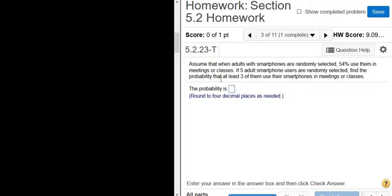So this problem is binomial. We have two possible outcomes. You can either use a smartphone or not use a smartphone in your meeting or class. P is always given in these problems, usually as a decimal or percent. So this 54% here, that's P. That's the probability of success.